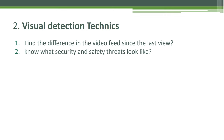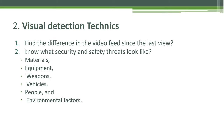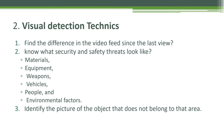Number two, know what security and safety threats look like. As a CCTV operator you must know how to identify unusual activities and what can pose a safety and security threat. Safety threats can include materials, equipment, weapons, vehicles, people, and environmental factors. Number three, identify objects that do not belong to that area. When monitoring the CCTV, focus on any unfamiliar object not belonging to that area to detect safety and security threats.